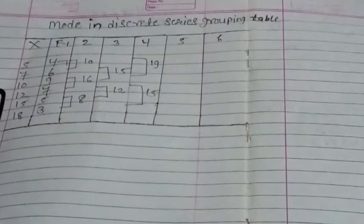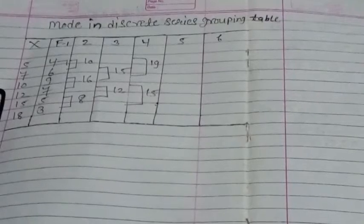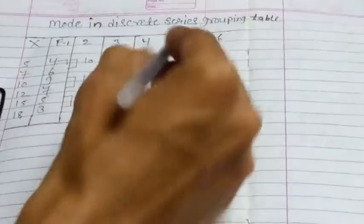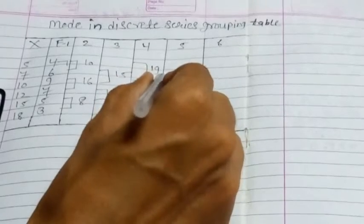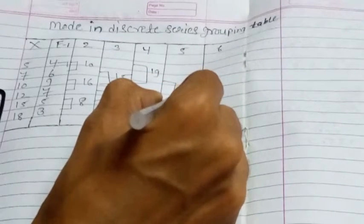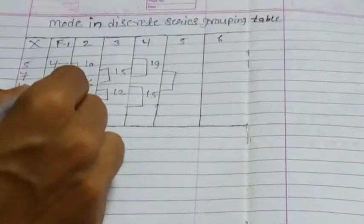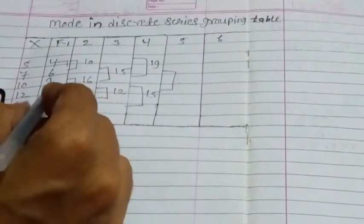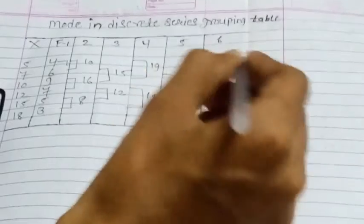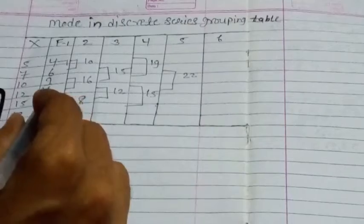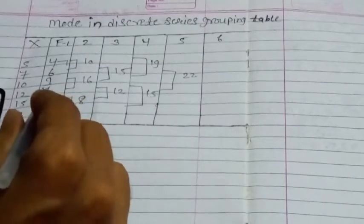In the 5th column, leave the 1st figure and add 3 figures. Leave 4 and add 6, 9, and 7 to get 22. After this, we don't have 3 figures left, so leave 5 and 3.